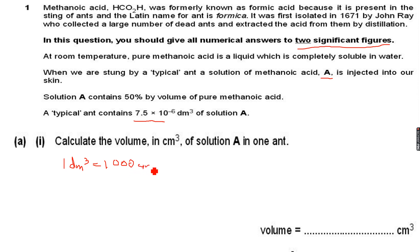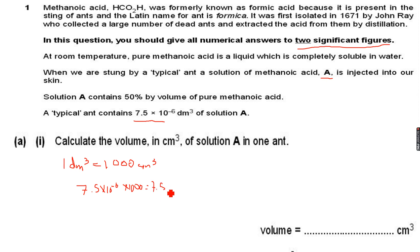So 7.5×10⁻⁶ dm³ multiplied by 1000 gives 7.5×10⁻³ cm³. The answer is 7.5×10⁻³ cm³.